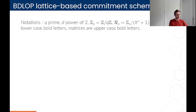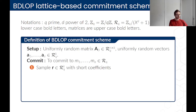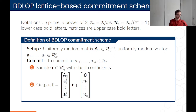First, the BDLOP lattice-based commitment scheme. How does it work? The setup is: you sample a uniformly random matrix A0, and then for every message you want to commit to — a message is an element of R_Q — you sample a uniformly random vector A1 to A_α from R_Q. To commit to these messages, you sample a short vector R with short coefficients, and the commitment is this big matrix times R plus 0, then the messages.